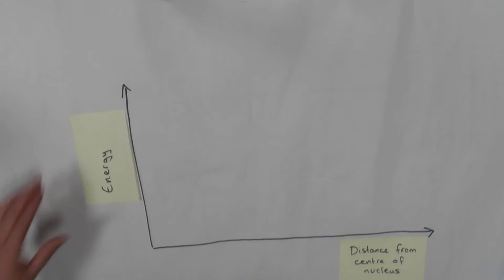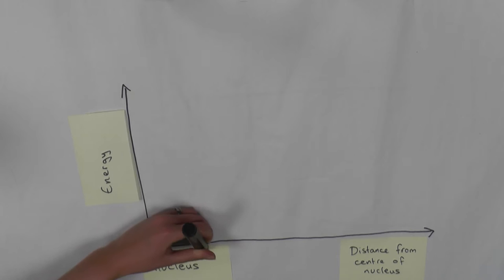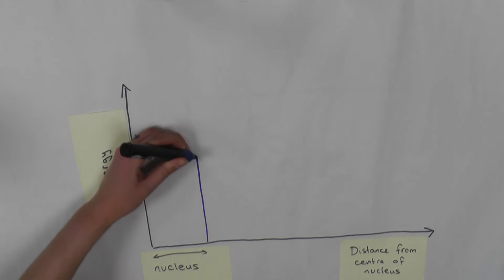If we plot the potential as a function of distance from the centre of the polonium nucleus, we get a region of low potential energy inside the nucleus, where the strong force is keeping the nucleons together. Outside the nucleus, the Coulomb repulsion between the nucleus and the alpha particle leads to a high potential that falls away with distance.